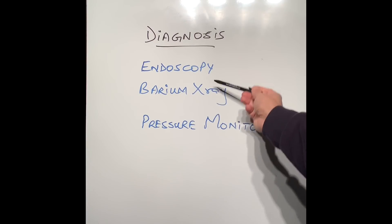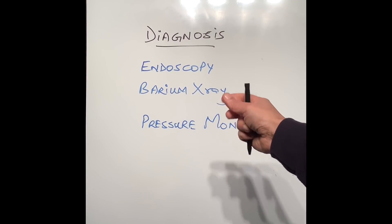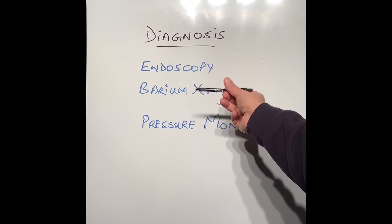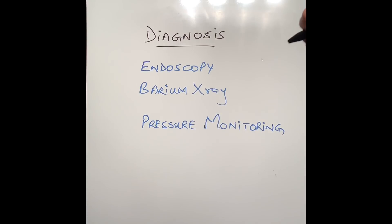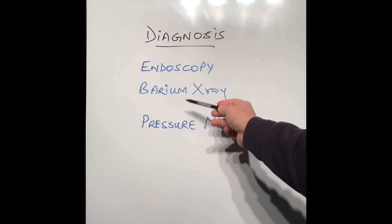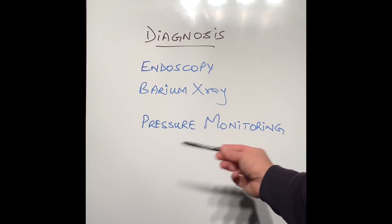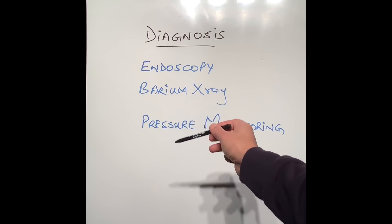The second way of diagnosing is a barium x-ray, in which the patient drinks a chalky dye and x-rays are taken, which shows whether the esophagus is too large or is it contracting properly.